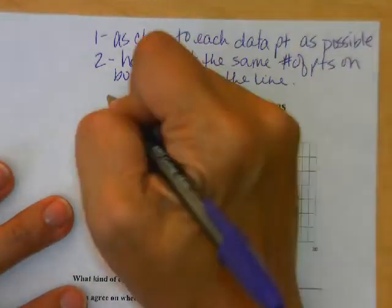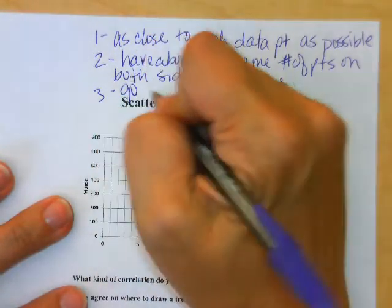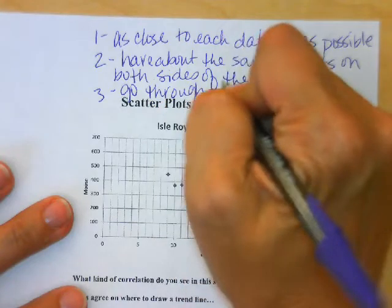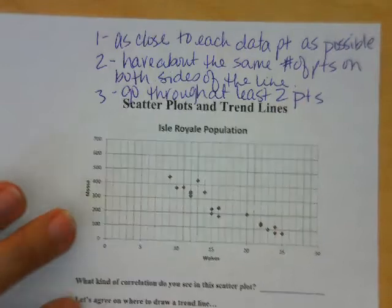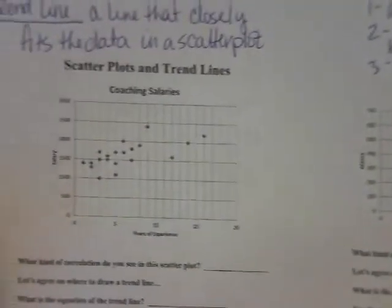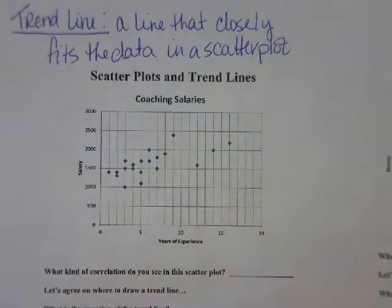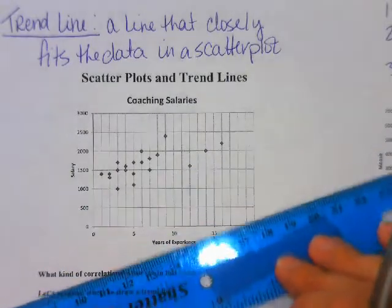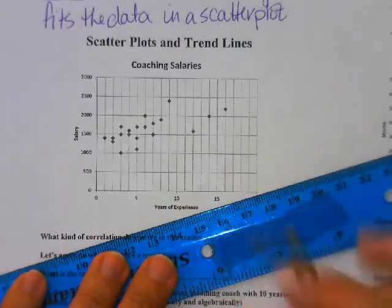And then finally, the third thing is we need to go through at least two points. We're going to practice doing that, and you're going to need either a regular ruler or a clear ruler so you can see where your dots are in relation to your line.